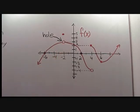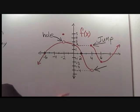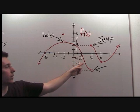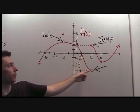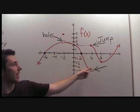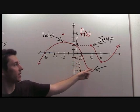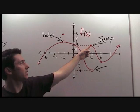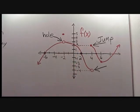There is a jump at x equals 4. At x equals 4, the values of f are coming down to negative 4 and then all of a sudden jump up to positive 2. That is a discontinuity.